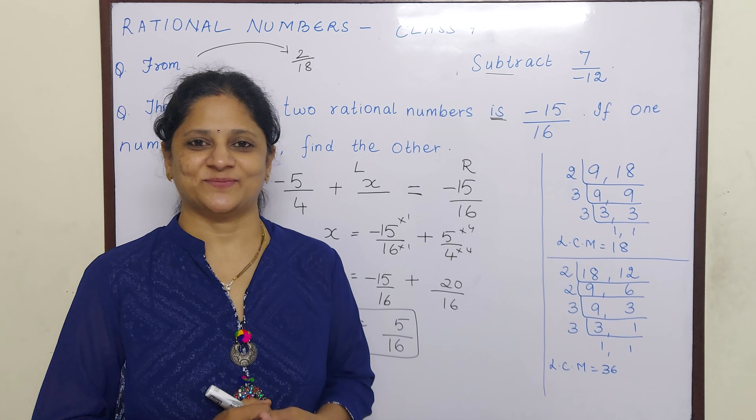Now again, the denominators are not equal, so let us find the LCM of 16 and 4, which is 16. 16 ones are 16 and 4 fours are 16. So minus 5 into 1 is minus 5, and 5 fours are 20. Now we have one plus and one minus, so we subtract and put the sign of the greater number. 20 minus 5 is 15, and the answer is x is equal to 15 by 16.